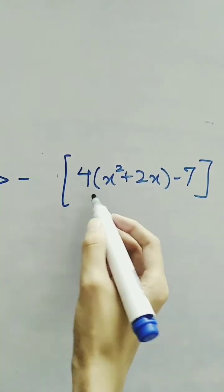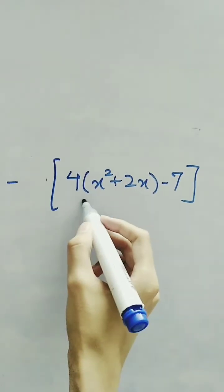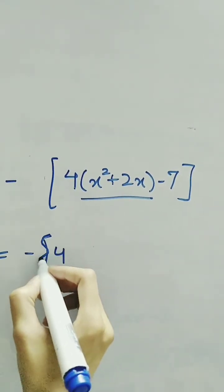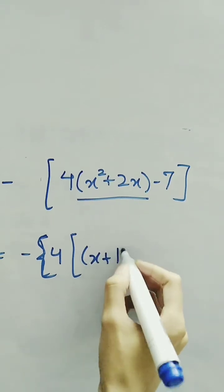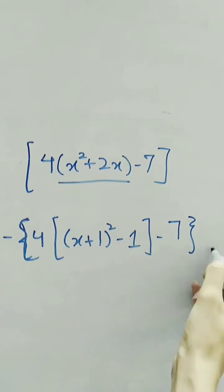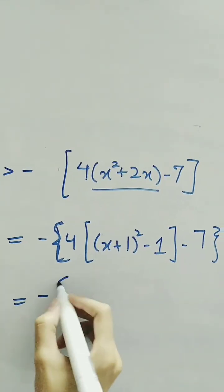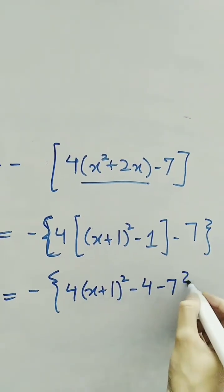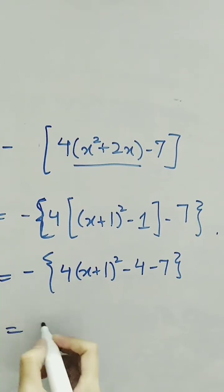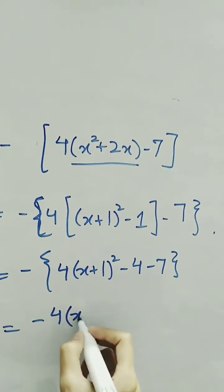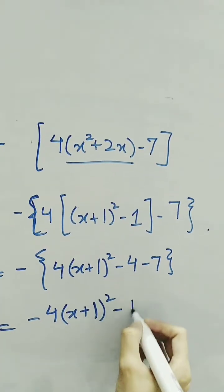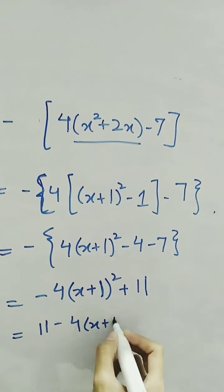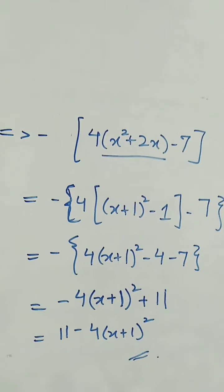We had the expression minus 4 bracket x squared plus 2x minus 7. Now we have the equivalent form, putting in x plus 1 whole square minus 1 minus 7. Opening the inside bracket: minus 4 times x plus 1 whole square minus 4 minus 7. Opening the outer bracket: minus 4x plus 1 whole square plus 11. We can also write this as 11 minus 4 times x plus 1 whole square. This is our complete square form.